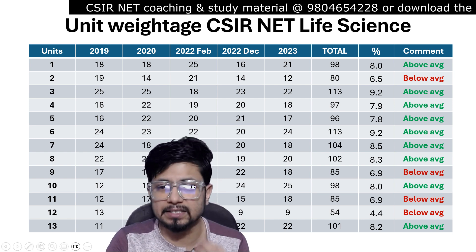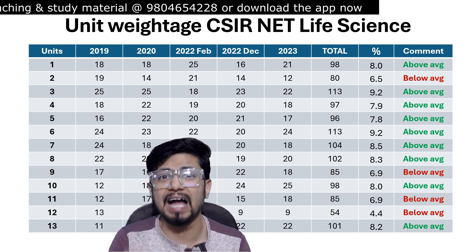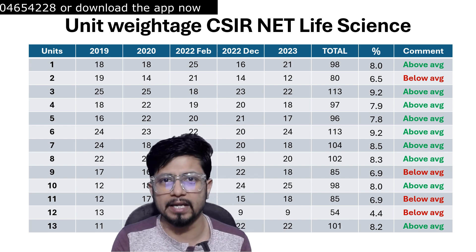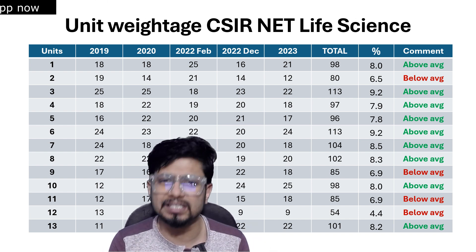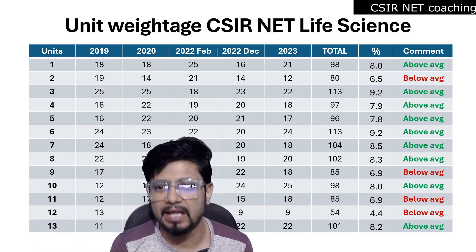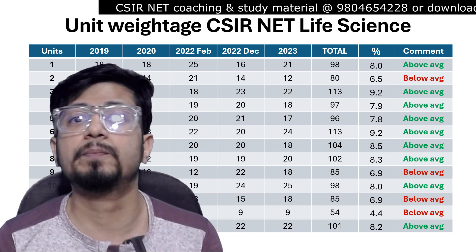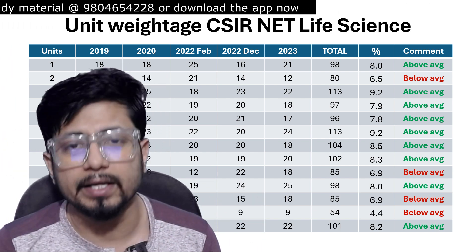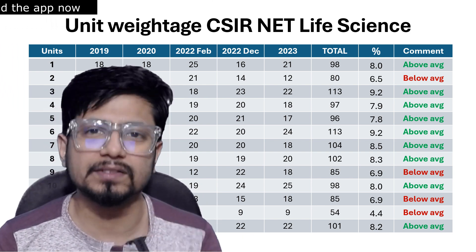The highest weightage units are Unit 3, molecular biology, and Unit 6, plant physiology, both at 9.2%. Approximately 20% of questions come from just these two units. So if you exclude Unit 3 or Unit 6, you are giving up 20% of the questions. Prepare wisely by knowing the unit-wise weightage of all 13 units of the CSIR life science syllabus.